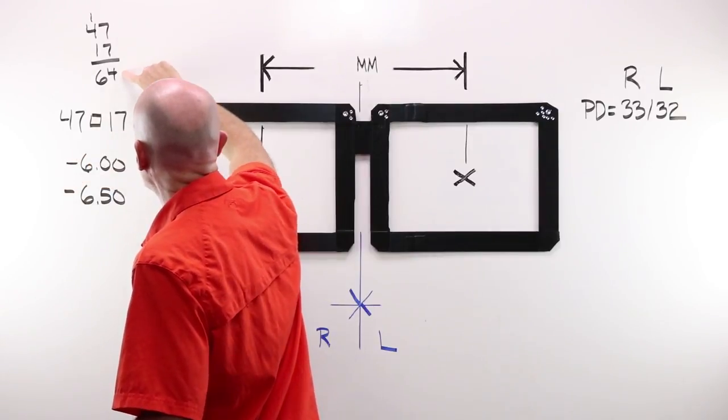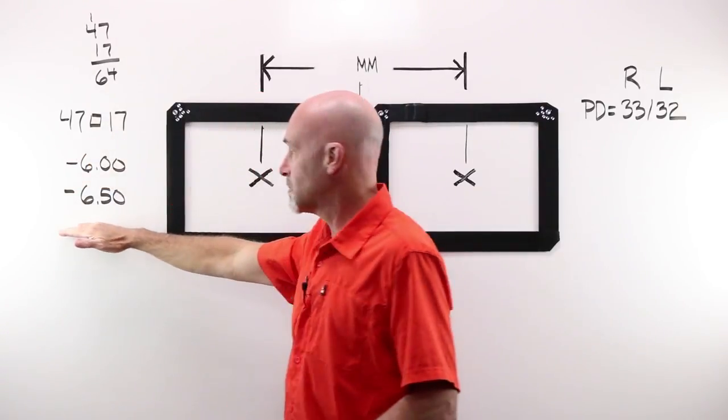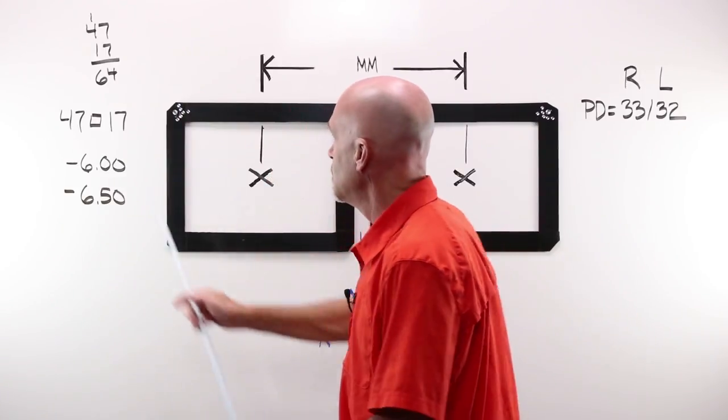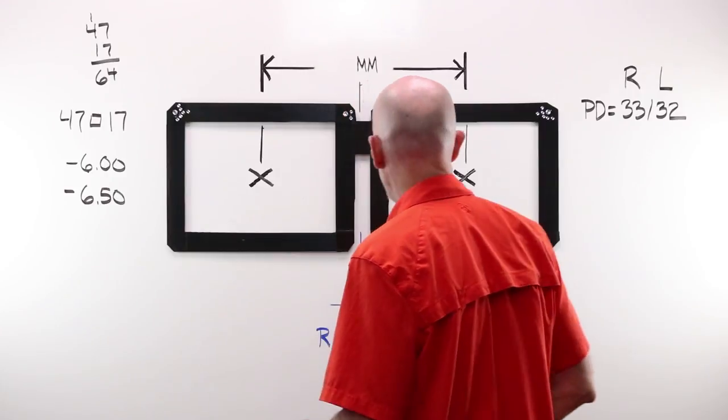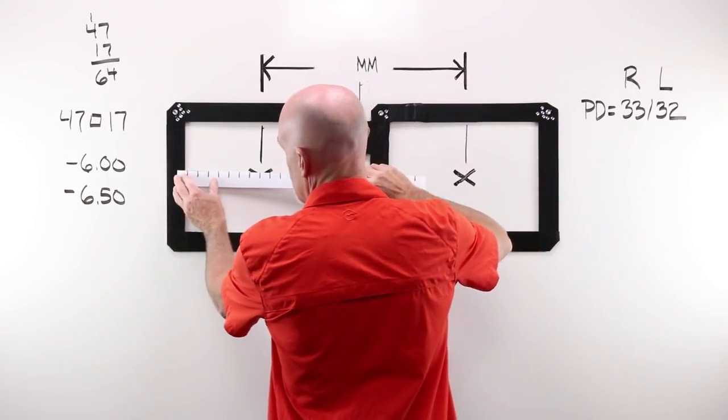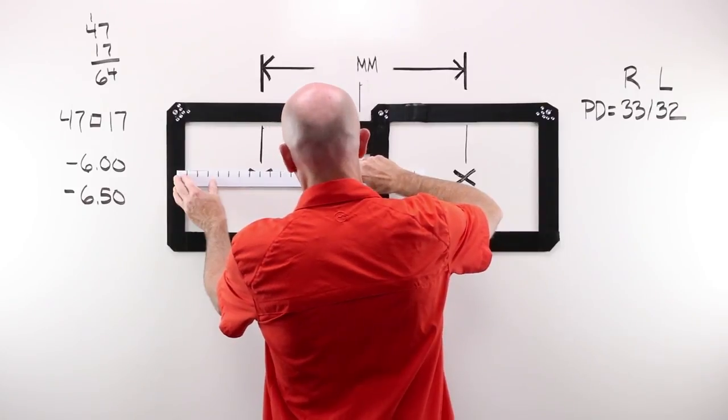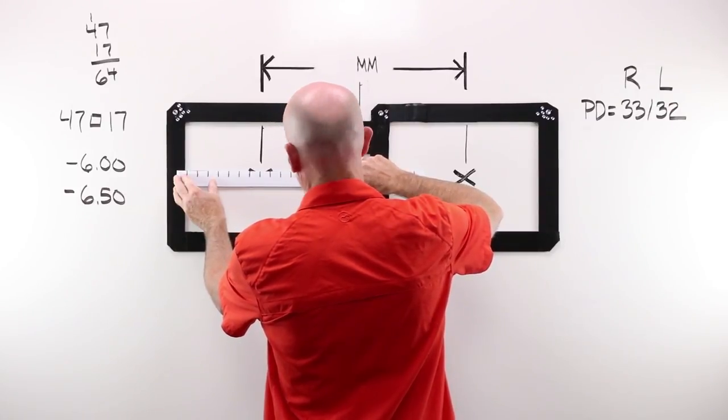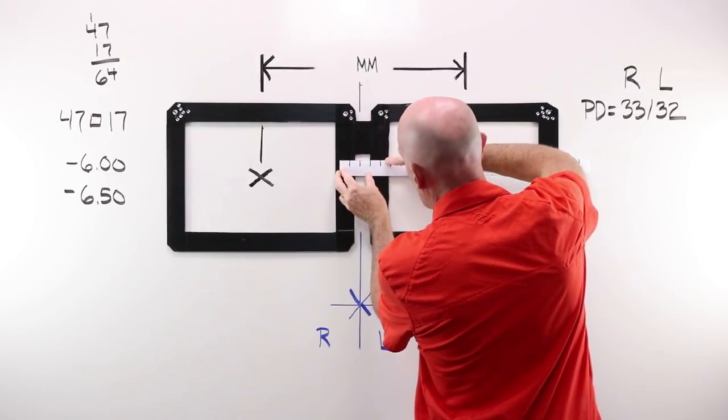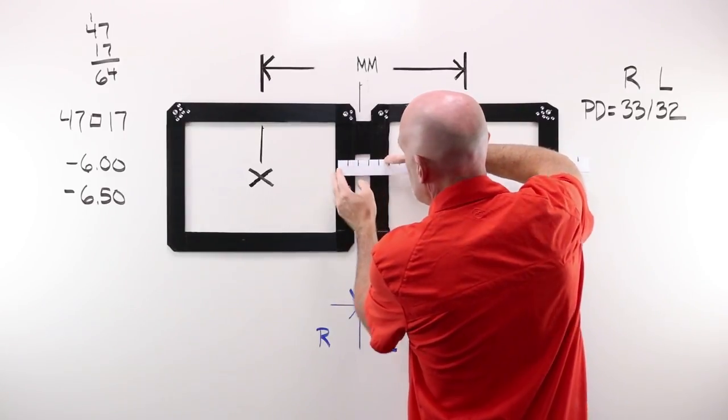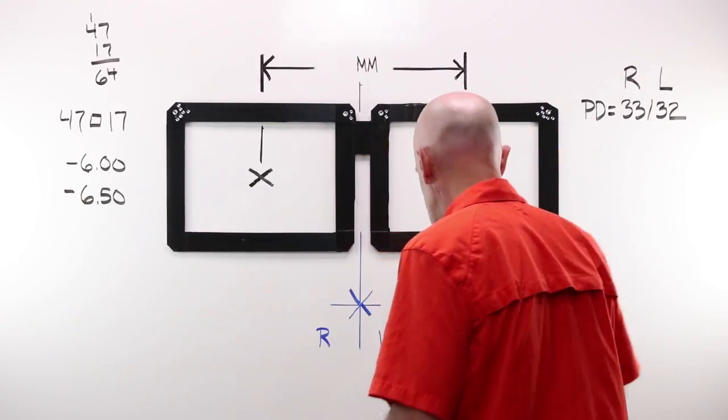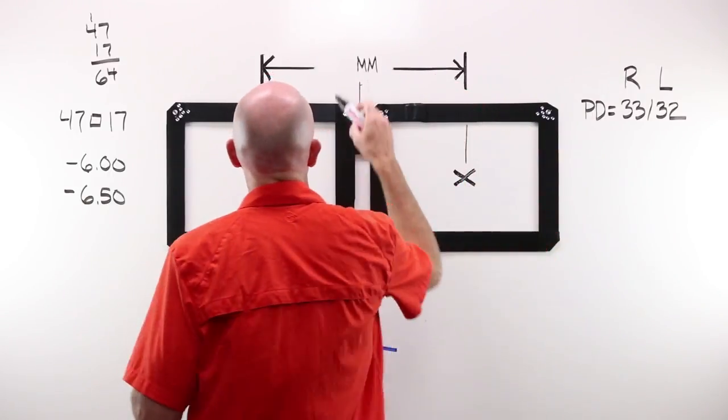I have SuperFrame. SuperFrame has a boxing system measurement of 47-17. 47 and 17 gives me a total of 64. My powers are getting up there. I'm going to be super careful about what I do. I'm going to make sure that 47 and that 17 are correct. Take out my PD stick. The only time we use a PD stick, I'm going to check my A, which is 47, and I would check my DBL. A nice 17, so we're good there.